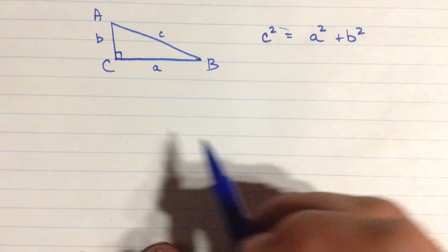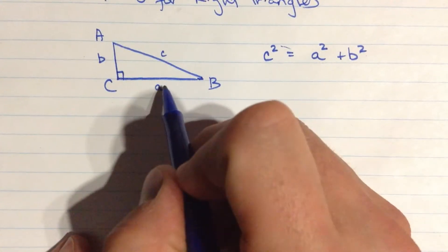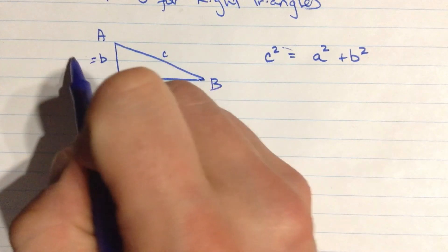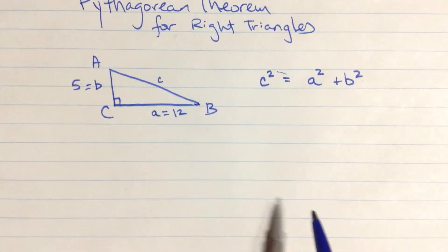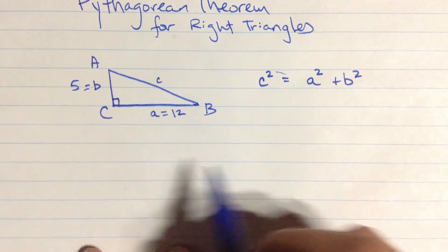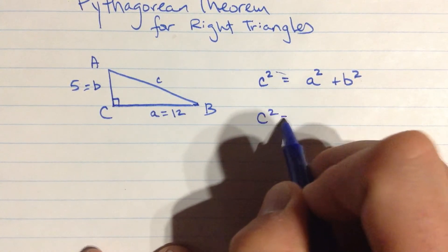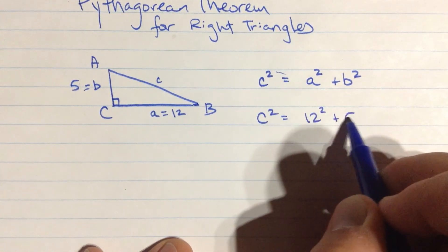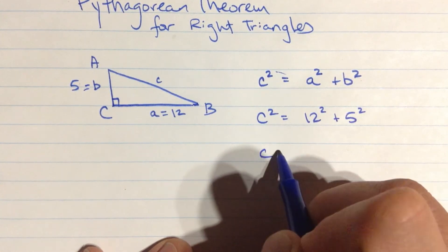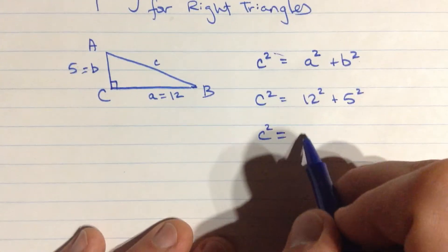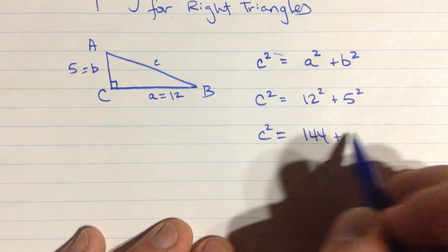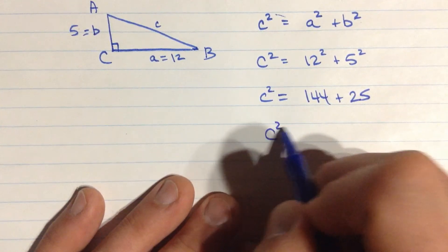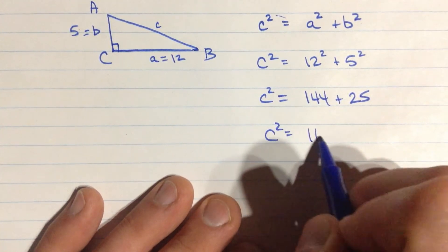So for example, let's say this side down here was 12, and let's say this side up here was 5. Then to find out what c is, I do c squared is equal to 12 squared plus 5 squared. c squared is equal to, that's 144, plus 25. c squared is equal to, adding that up, 169.